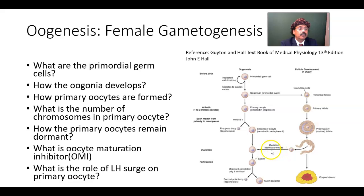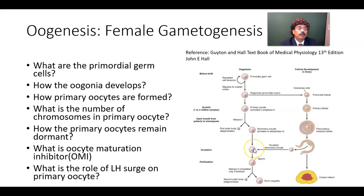The ovum is discharged at the secondary oocyte stage, but its second meiotic division is not yet completed. We have the ovulatory secondary oocyte, which has started the second meiotic division — the first meiotic division is already over. It will be arrested in meiosis 2. The second meiotic division will only be completed once the secondary oocyte is penetrated by a sperm, after which there will be zygote formation.